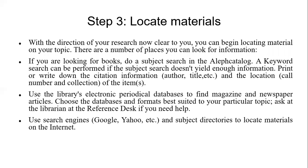A keyword search can be performed if the subject search doesn't yield information. Print or write down the citation information — author, title, subject, location, call number, and collection. If you search the online public access catalog by title, author, subject, keywords, call number, or location, you can find what you need. Use the library's electronic periodical database to find magazine and newspaper articles, and choose the databases and format best suited to your particular topic.